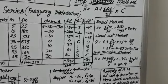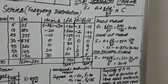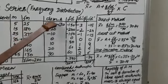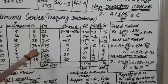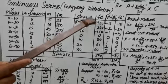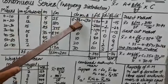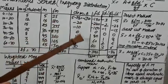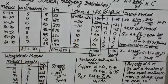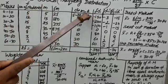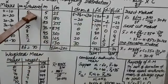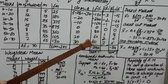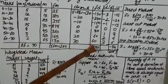The same numerical can be done by shortcut method. In shortcut method, we try to reduce the calculations. After calculating mid-value, we will calculate d — deviation m minus a. Assumed mean is taken as 35. So 5 minus 35 = minus 30, 15 minus 35 = minus 20, then minus 10, 0, 10, 20, and 30. Then we calculate fd (frequency × d): minus 30 × 5 = minus 50, and in this way minus 240, minus 150, 0, 80, 60, and 60. Sigma fd is equal to minus 340.